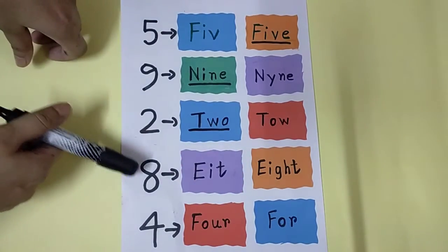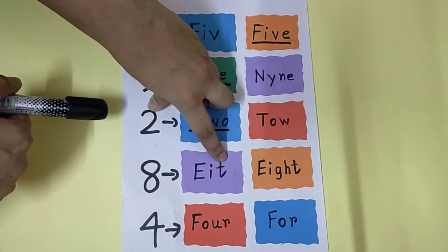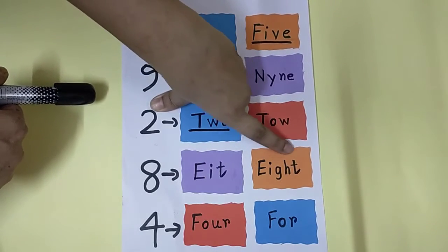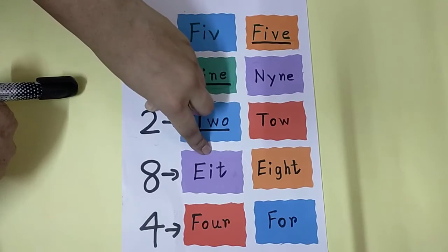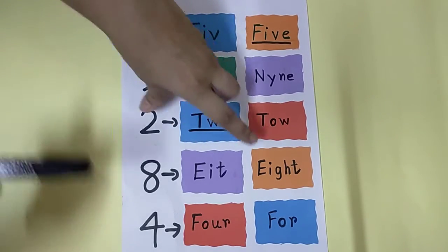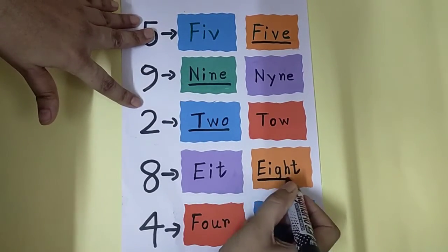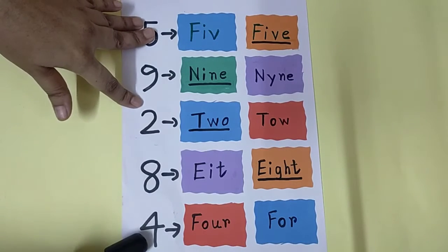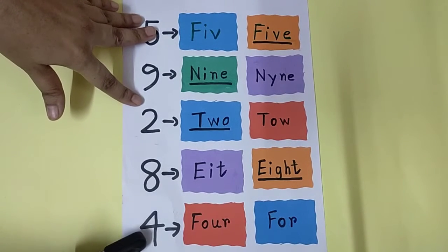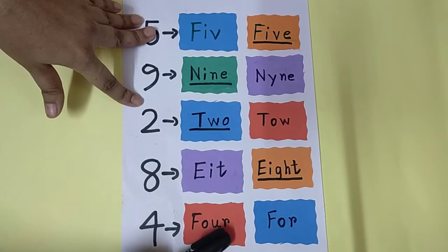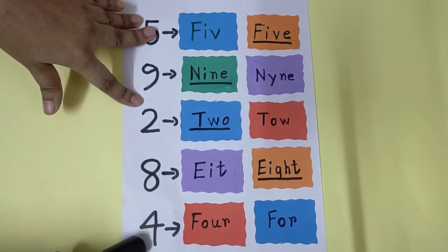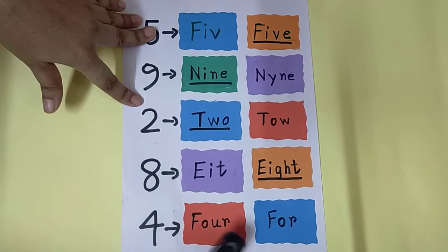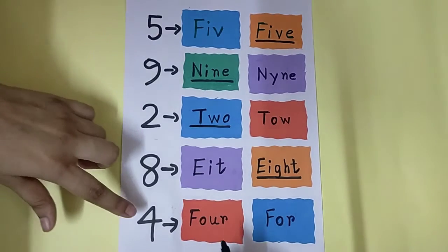Now, eight. E-I-T-H or E-I-G-H-T? Which one is correct? Orange one. Very nice. Then, what number is this? This is four. F-O-U-R or F-O-R — which one is the correct spelling? F-O-U-R. Right? Very nice.